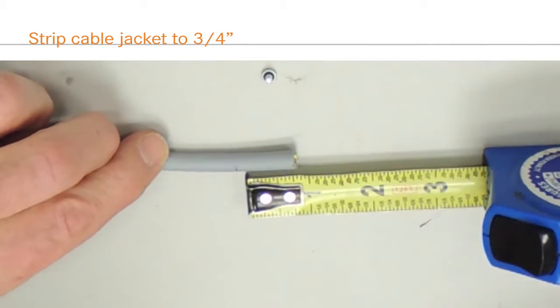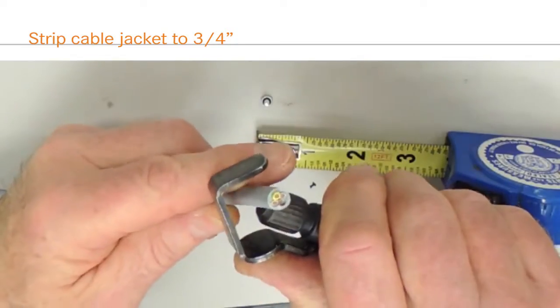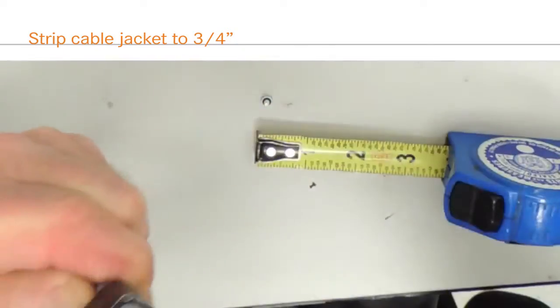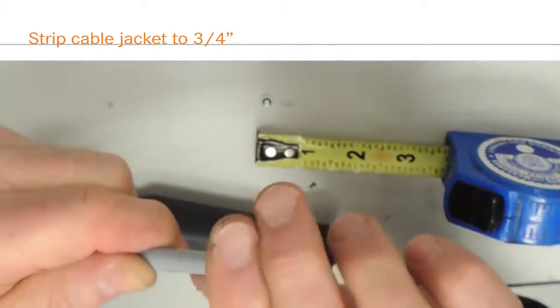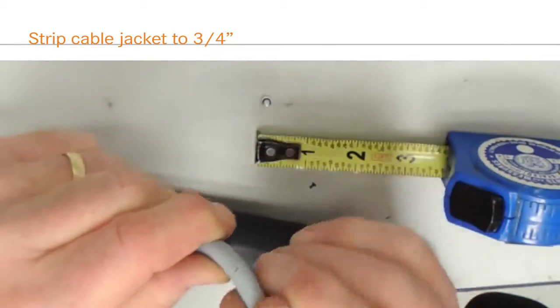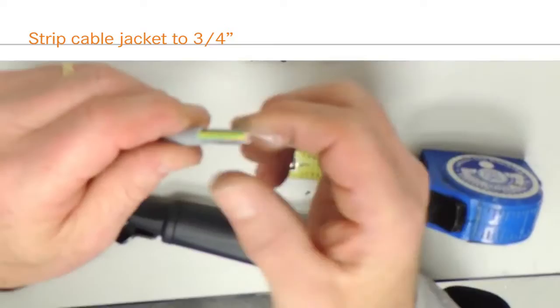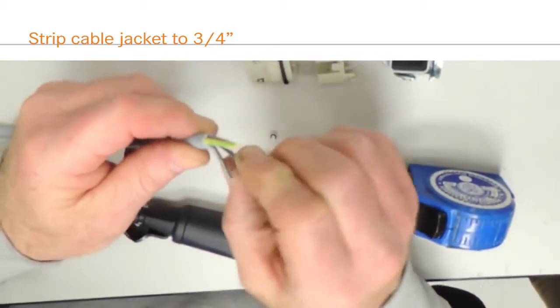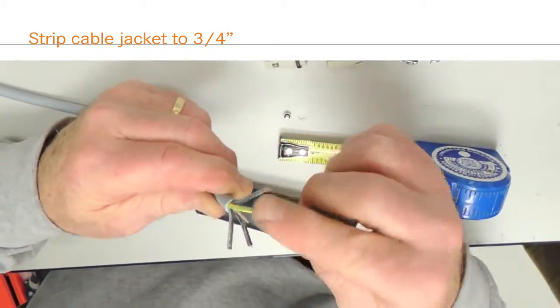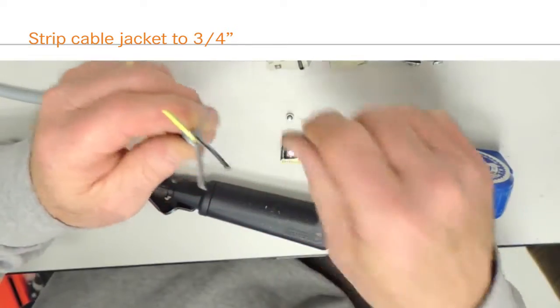First, prepare the cable by stripping the outer jacket to the appropriate length. The jacket should be stripped back enough to allow you to easily terminate the individual conductors, but not so much that the jacket is stripped past the hood's gland when assembled. For EPIC HA3 housing, three-fourths of an inch is sufficient stripping length.